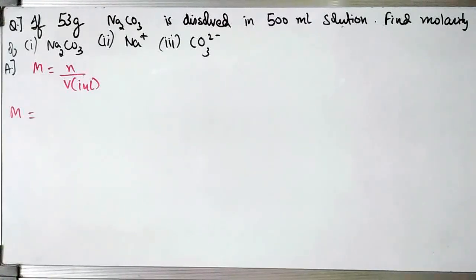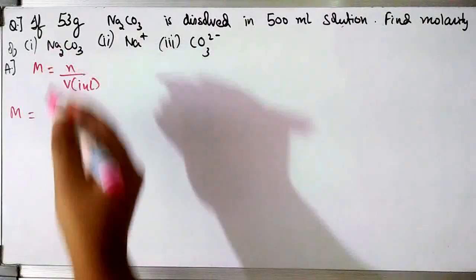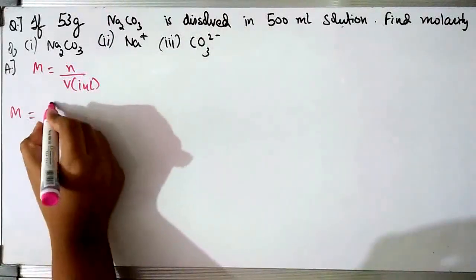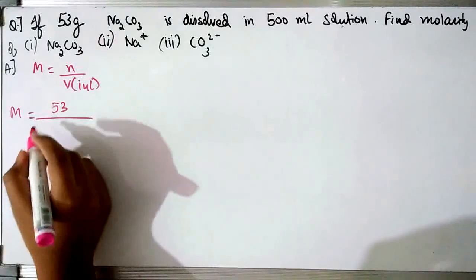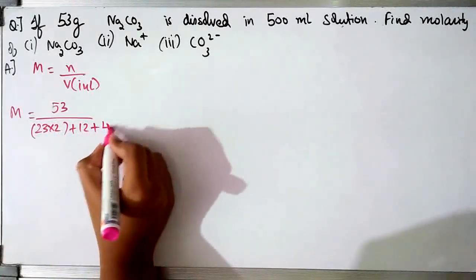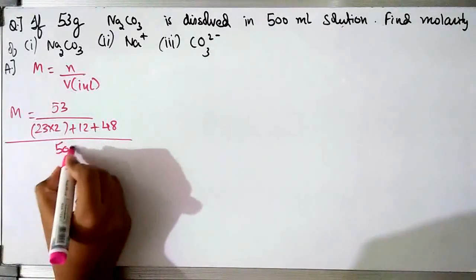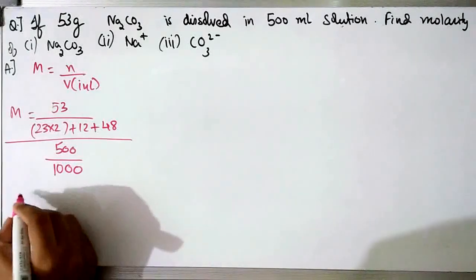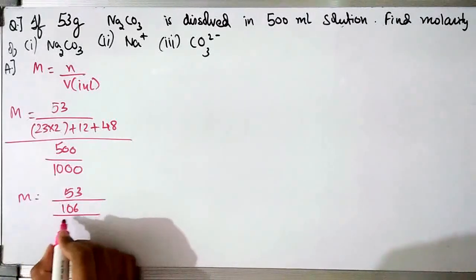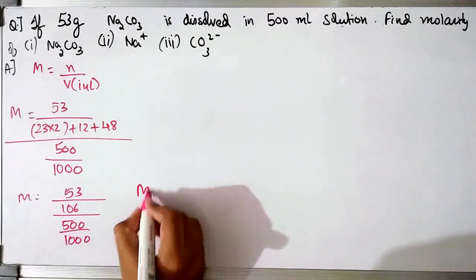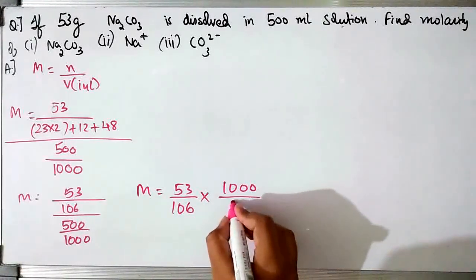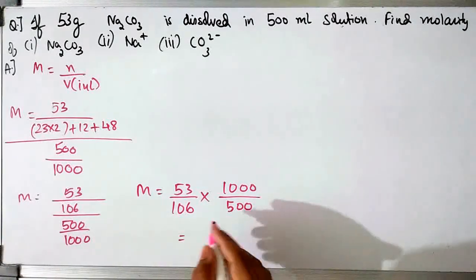In this question, 53 grams of Na₂CO₃ is dissolved in 500ml of solution. First find the molarity of Na₂CO₃: molarity equals given mass 53 upon molecular mass, which is 23 × 2 + 12 + 16 × 3 = 106, upon volume 500ml converted to litres as 500 by 1000. This becomes 53 by 106 upon 500 by 1000.